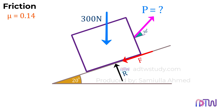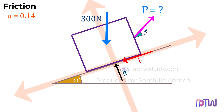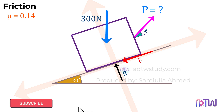As I explained in my previous video, if we consider the horizontal and vertical axes like this, we will have considerably more inclined forces to resolve. To avoid this, we consider our inclined surface as the horizontal axis and a perpendicular to that as our vertical axis. By doing this, we now have only two forces inclined to our axes: the force P and the weight of the body.